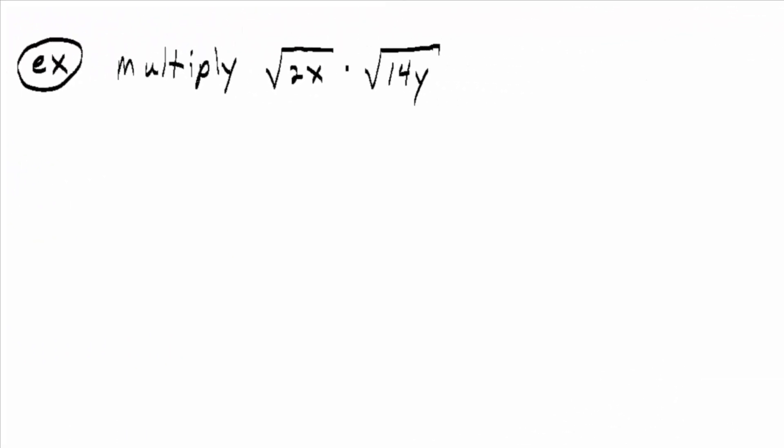Using the multiplication version of the rule, if you're asked to multiply the square root of 2x times the square root of 14y, what does that rule, the first rule we talked about, say? That's equal to one big square root of what? There you go. 2x times 14y.